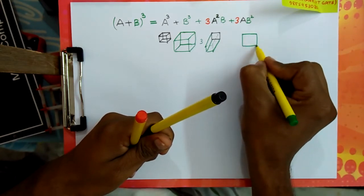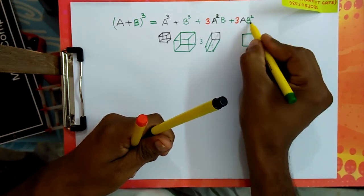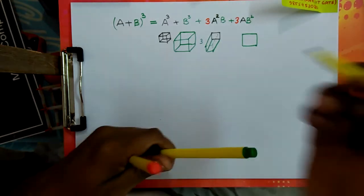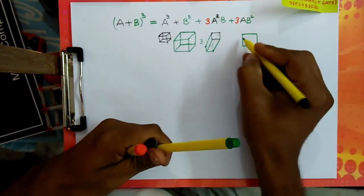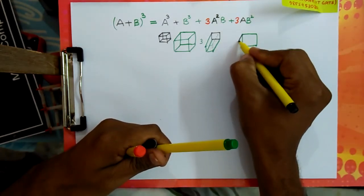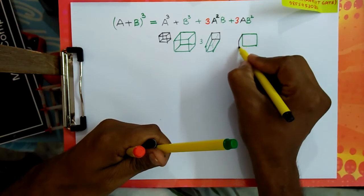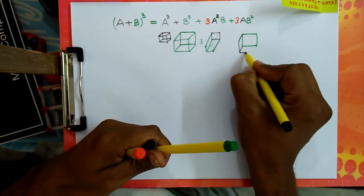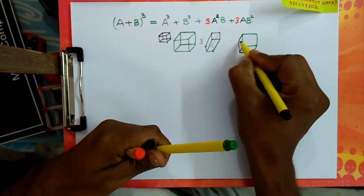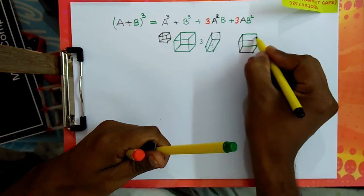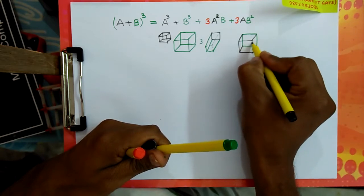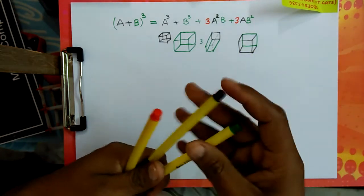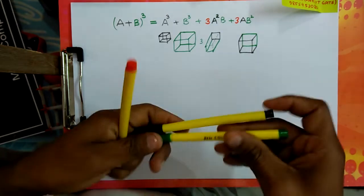And what does the last term mean? There is a b squared face — this is b squared — and then the height or length of this is a. So it is an ab squared cuboid.